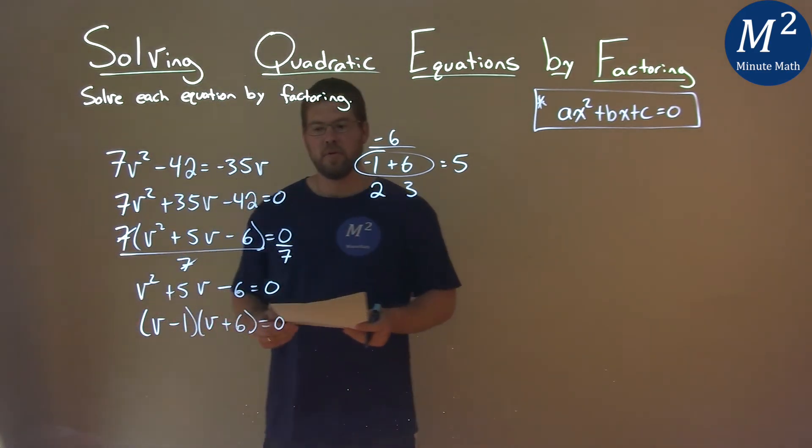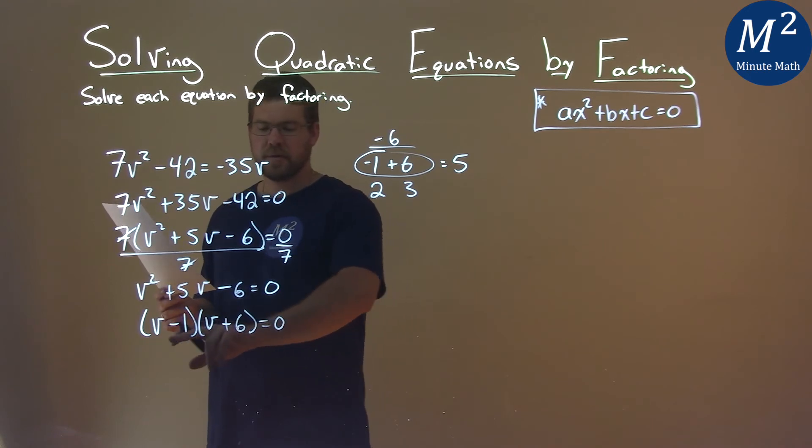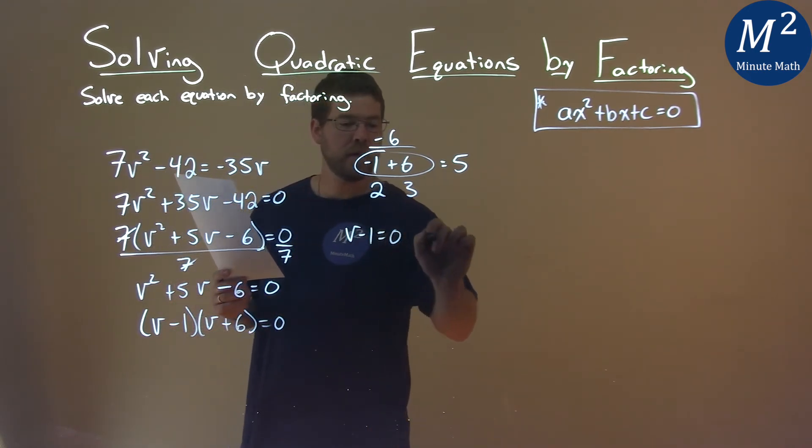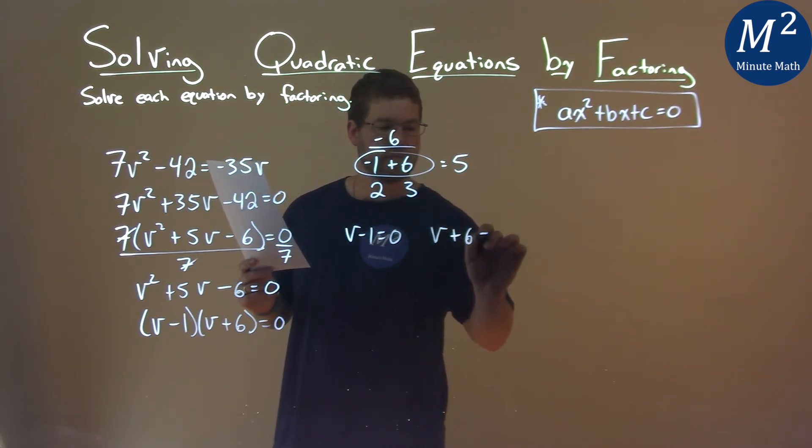And now we have to solve this. So what we do is we set each part individually equal to 0. v - 1 = 0, and v + 6 = 0.